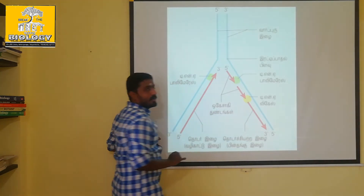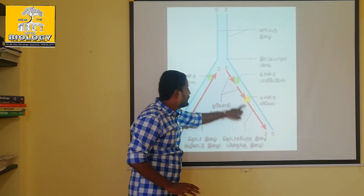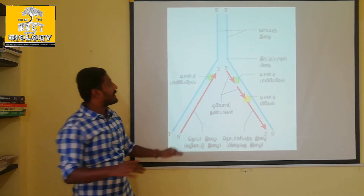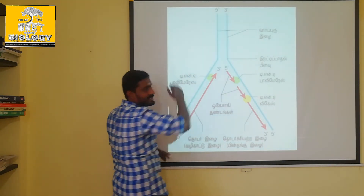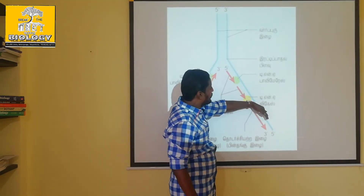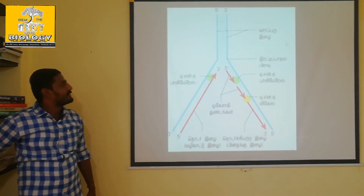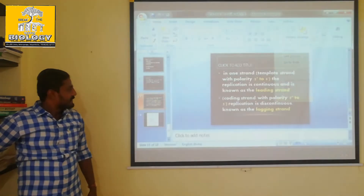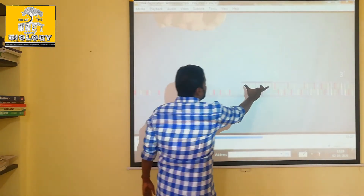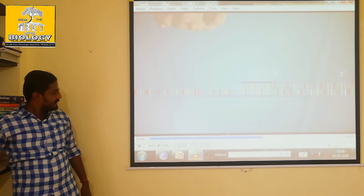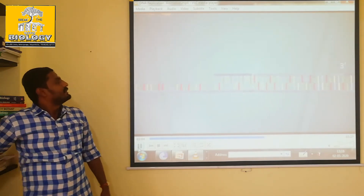The strands are coming from opposite directions. We will now see the lagging phase. This is the lagging phase. In the end, the RNA primer is already created, and again the RNA primer will come and form another RNA primer.